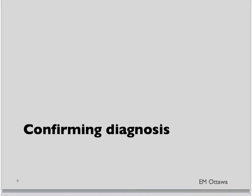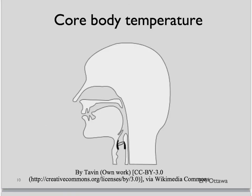How do we establish the diagnosis? First, you need a core body temperature. The usual temperature probe for the tympanic membrane or under the armpit is not accurate for low temperatures, so we need a special low-reading thermometer. The most accurate probe is an esophageal probe that is inserted like an NG tube — it will measure core temperature in the esophagus.